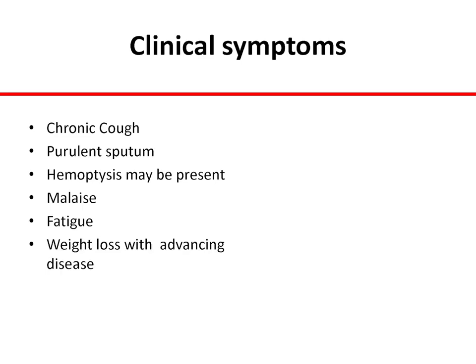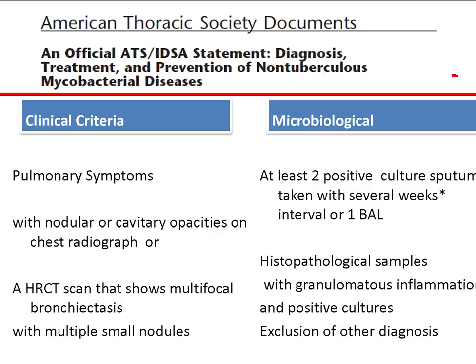Clinical symptoms for pulmonologists include chronic cough, purulent sputum, and hemoptysis. More severely ill patients have malaise, fatigue, and weight loss with advanced disease. The American Thoracic Society defined diagnostic criteria. I would say lung pathology is more like a constellation — not just about the bug, but about a whole constellation of findings.